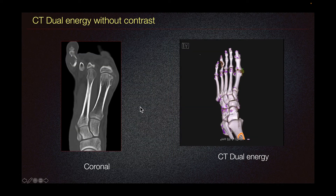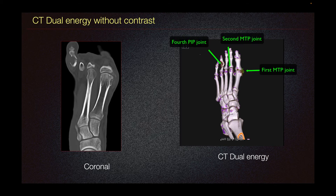In today's imaging, we can further evaluate this lesion to prove the presence of gouty deposit. CT dual energy without contrast allows for differentiating the deposits by their different x-ray spectra, using the principle that attenuation of tissues depends not only on their density, but also on their atomic number. By convention, the deposits of gout are colored green.